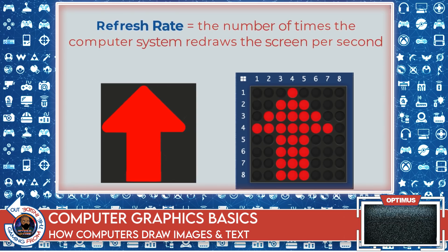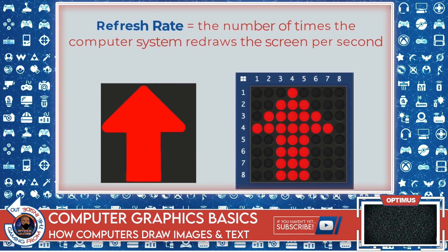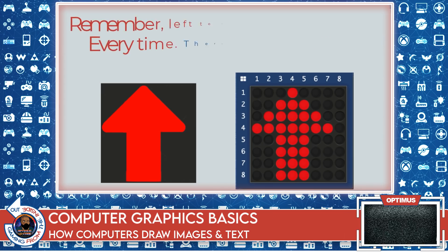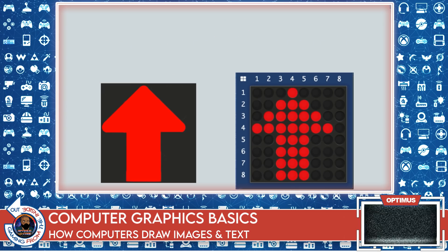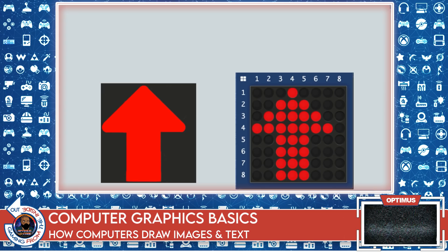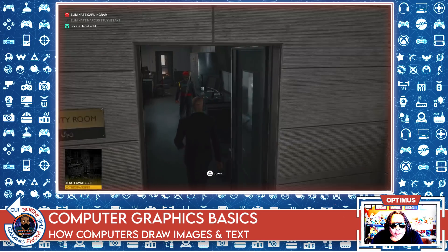We haven't gotten into frames per second yet — this is just the basics. I want you to understand the notion of the refresh rate; frames per second is a similar but different concept that we'll get to later in the series. Right now we're just dealing with how the computer actually draws, without any game-specific concepts yet. The video you're watching right now — your monitor is redrawing it at least 30 times per second. While the arrow is just sitting there, it's actually being redrawn a minimum of 30 times every second.